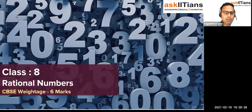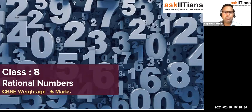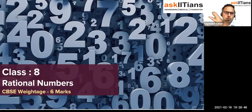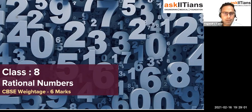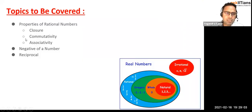By the way, this chapter is there in your ninth grade also, which comes with the name Number System, in which we are going to learn not only about rational numbers but also about irrational numbers. Whatever numbers we have in maths, they can be divided into two categories — rational and irrational. Right now we are going to focus on rational numbers.